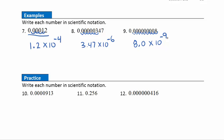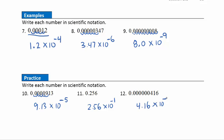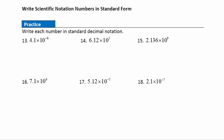Practice questions for small numbers. Question 10: 9.13 times 10 to the negative — moving the decimal five places to make it smaller, so 10 to the negative fifth. Question 11: 2.56 times 10 to the negative — moving just one decimal place, so 10 to the negative first. Question 12: 4.16 times 10 to the negative — moving seven places, so 10 to the negative seventh.